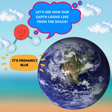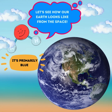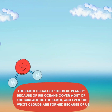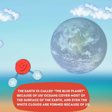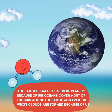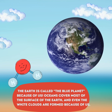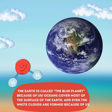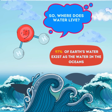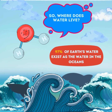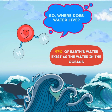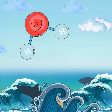Let's see how our Earth looks from space — it's primarily blue. The Earth is called the blue planet because of us. Oceans cover most of the surface of the Earth, and even the white clouds are formed because of us. In fact, 97% of Earth's water exists as water in the oceans.